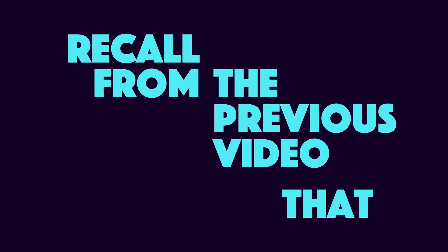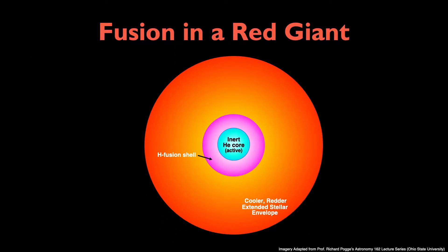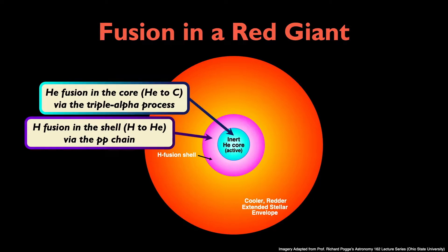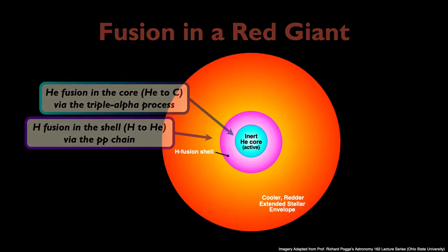Recall from the previous video that fusion in a red giant includes helium fusion in the core and hydrogen fusion in the shells surrounding the core. But what happens to the star now?